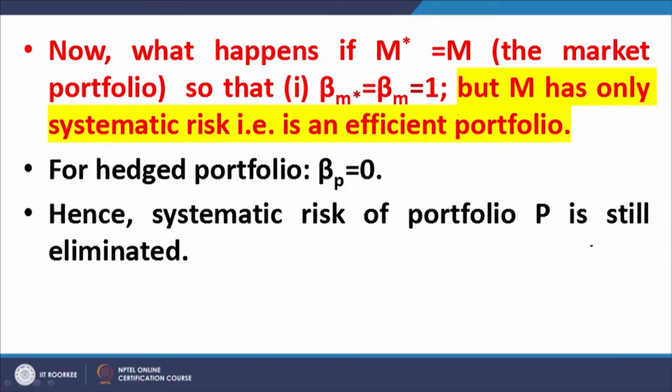The beta of the market portfolio is also equal to 1, and systematic risk is measured only in terms of beta. Therefore, by replacing M* by M, we are not affecting the systematic risk of the portfolio — the systematic risk continues to be zero. As far as the unsystematic risk is concerned, the unsystematic risk of M equals zero because it is a market portfolio: it is fully diversified. Because M has no unsystematic risk, the addition of M to S will not change the unsystematic risk of S. So, by using this combination of market portfolio and S, we have been able to construct a portfolio that has zero systematic risk but has unsystematic risk identical to the original portfolio of S.